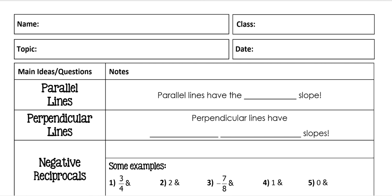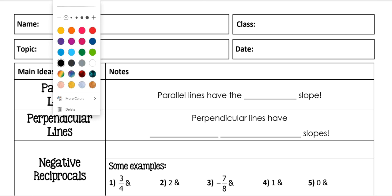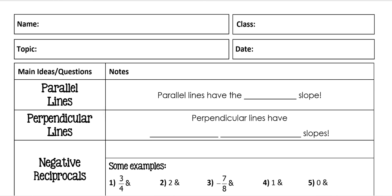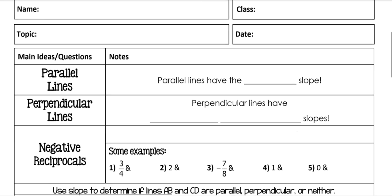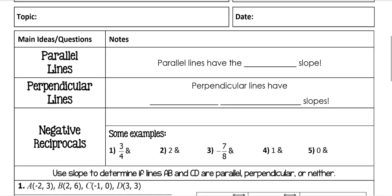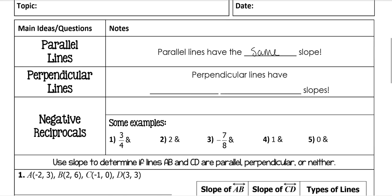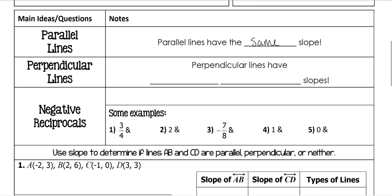Today we're going to talk about parallel and perpendicular lines and how their slopes are related to each other. Parallel lines have the same slope, and perpendicular lines have the opposite reciprocal.